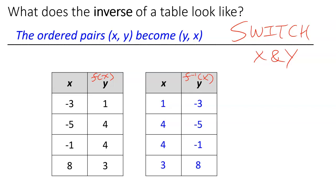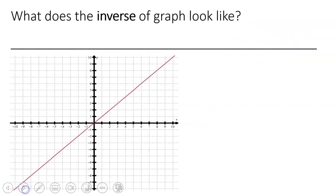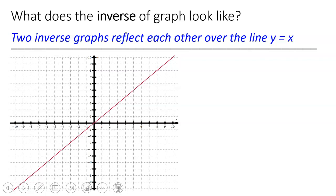That's if it's a table. Now let's move on to graphs. What does the inverse of a graph look like? Write this down: two inverse graphs reflect each other over the line y equals x. This diagonal line is y equals x. They are what we call symmetrical — they have symmetry.